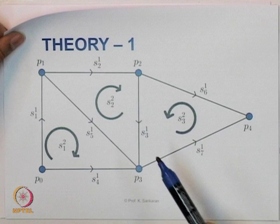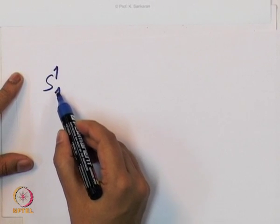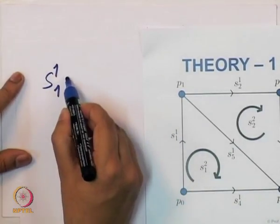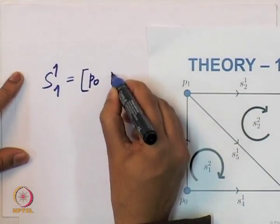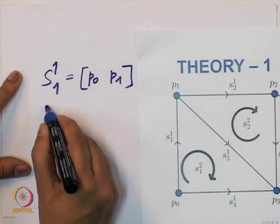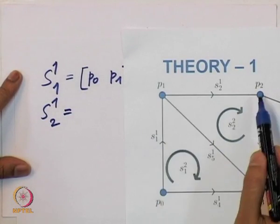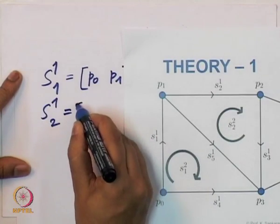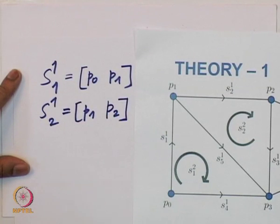Let us define the first edge S1_1. It is a 1-simplex with ordinal number 1 — this line with starting node P0 and ending node P1. Similarly, S1_2 will have starting node P1 and ending node P2. We can do the same for all other edges.